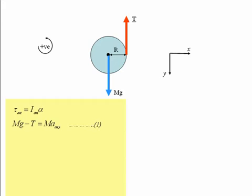That resultant force is just equal to the mass of the yo-yo times the acceleration of its centre of mass in the y direction. That's just a_CMy.